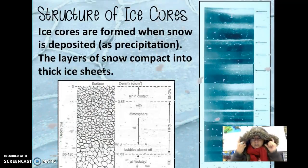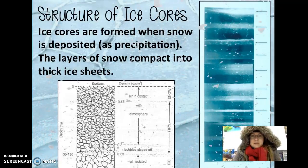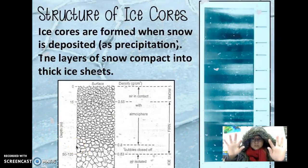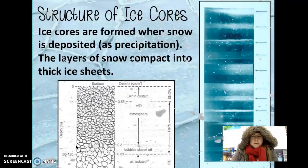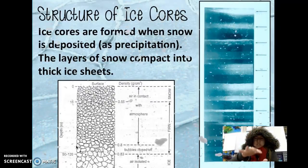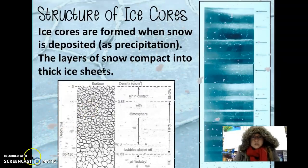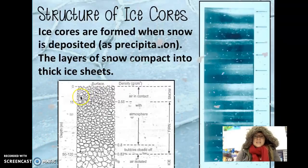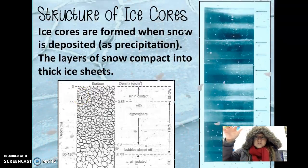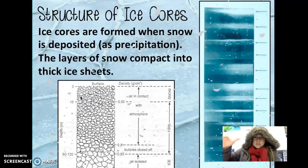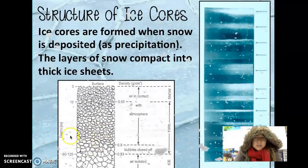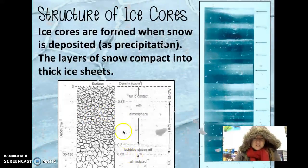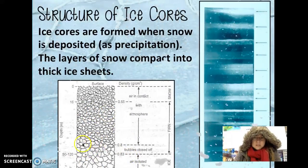So what are ice cores made of? Ice cores are made of ice that forms when snow falls down onto the ground. As precipitation occurs, it compacts and pressurizes over time. Snow falling at the surface has lots of air pockets, and as more layers of snow accumulate, the pressure smushed those air bubbles down until they get compressed, trapped, and closed off.